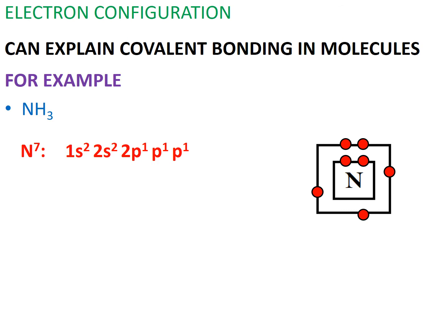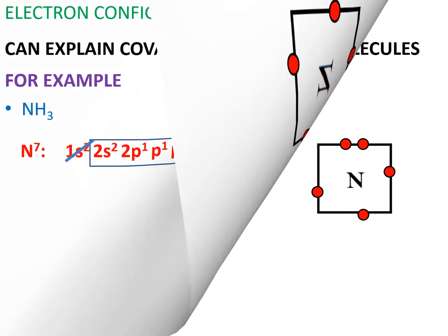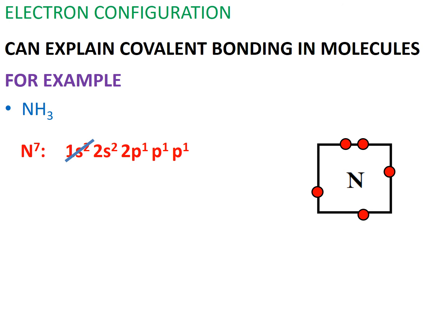Since the electrons in nitrogen's second shell are its outermost electrons, these electrons are considered valence shell electrons. As a result, we only need to show these electrons because this shell contains electrons that can participate in covalent bonding. We do not need to show electrons that are not in the outermost shell because they will not participate in any covalent bonding. Therefore, nitrogen's valence shell is made up of two 2s electrons and three 2p electrons.